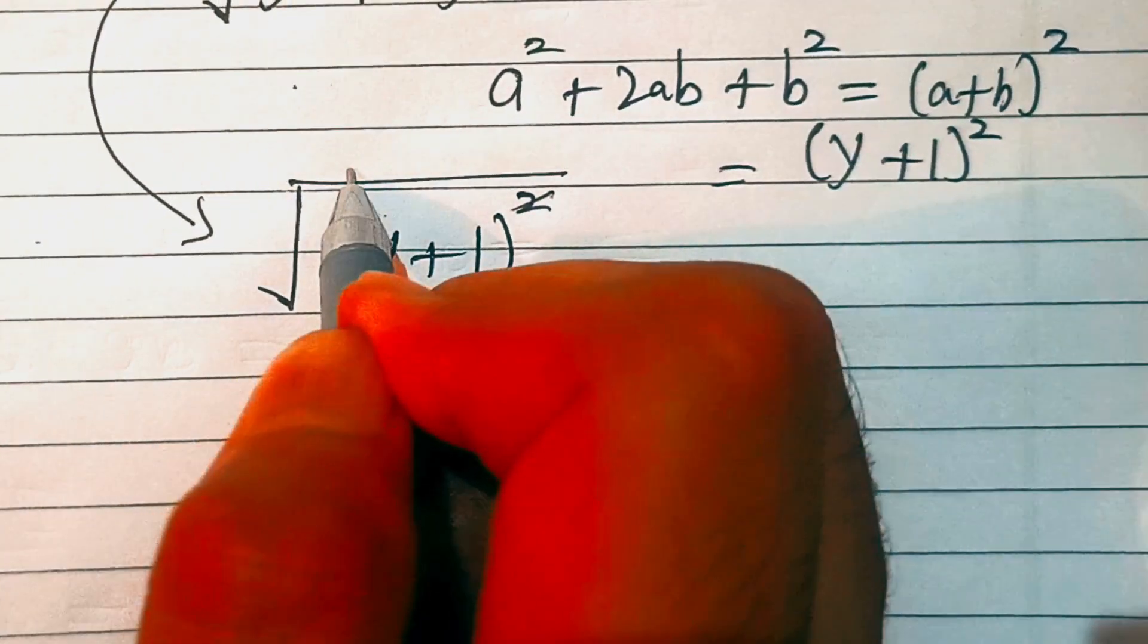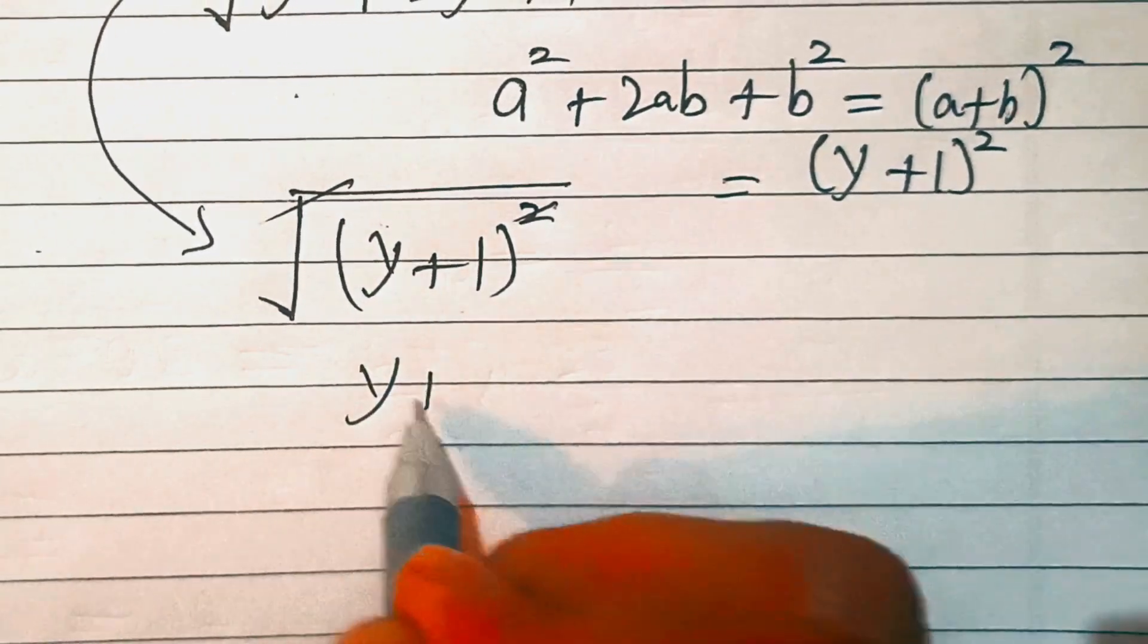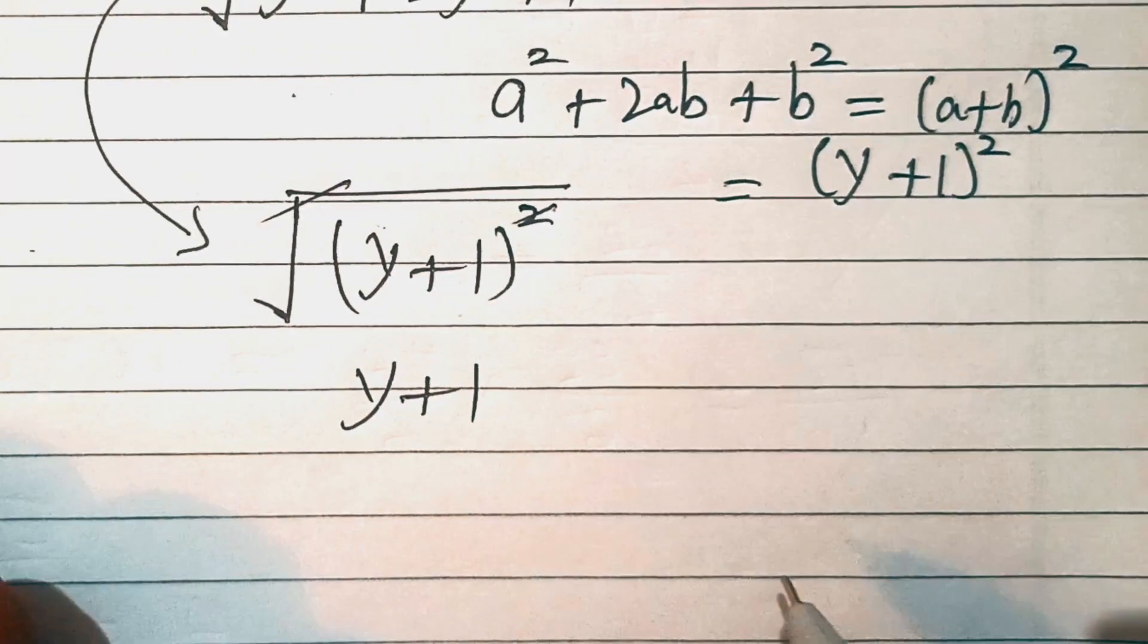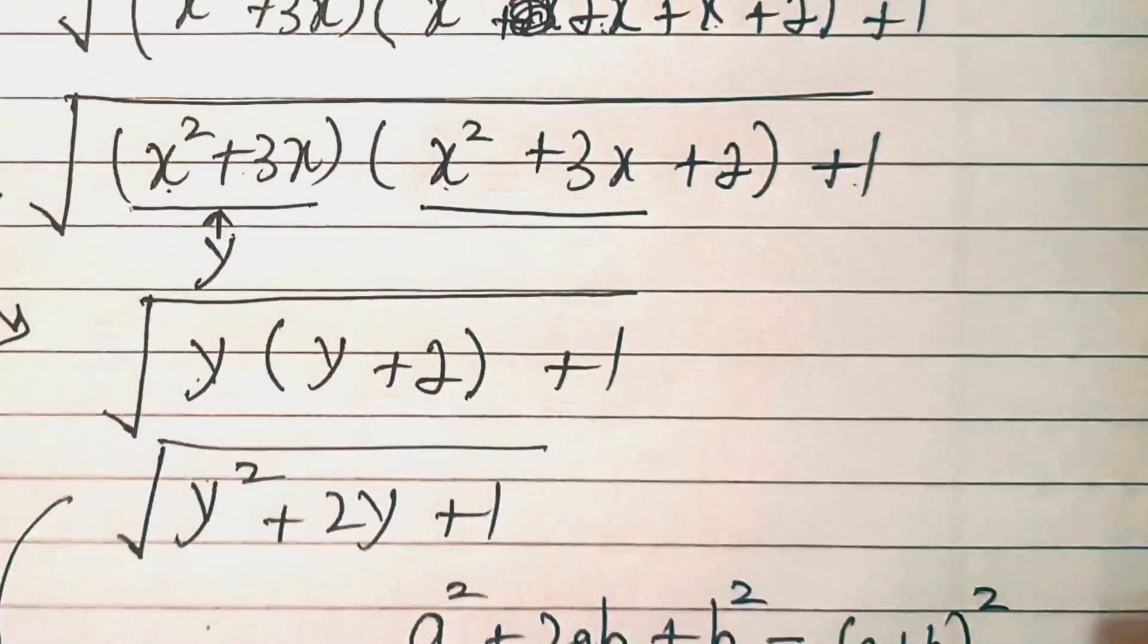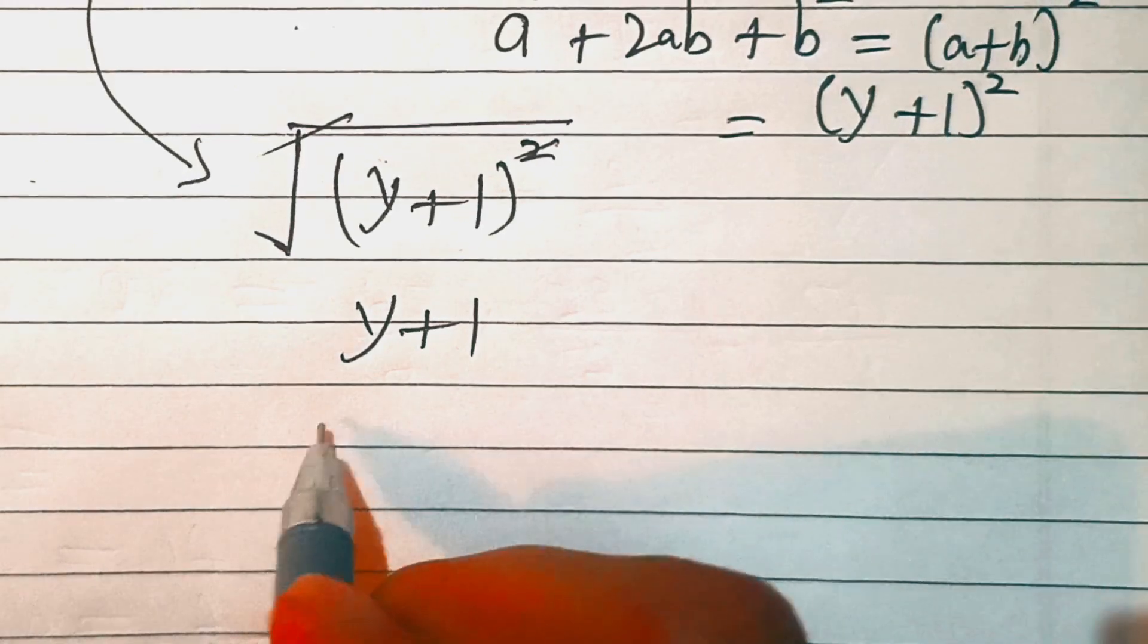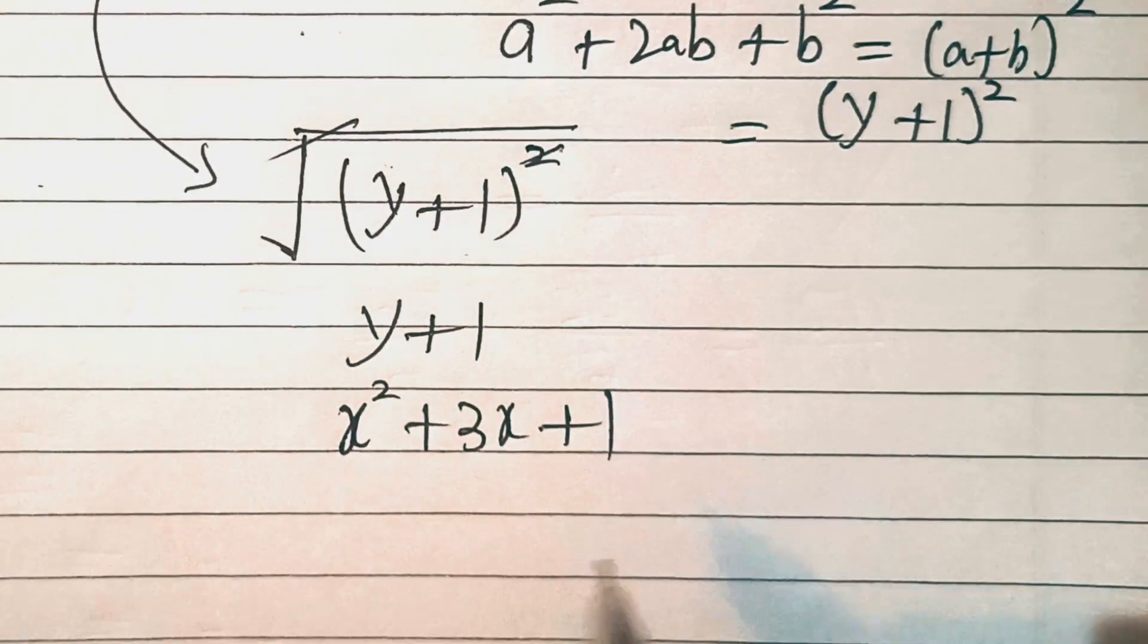Now this square and square root will cancel out, so we are left with y plus 1. Now let's substitute the value of y, which was x squared plus 3x. So this is x squared plus 3x plus 1.